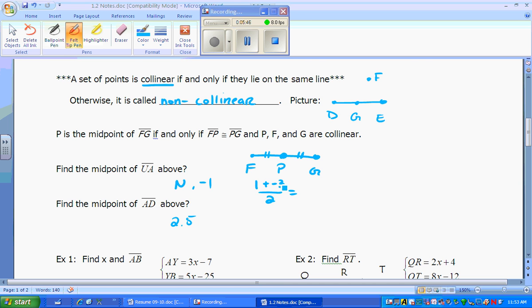So 1 plus negative 3 is negative 2 divided by 2, giving you negative 1, which is where it was located at N. So the midpoint formula is you take the two numbers, first number, add the second number, and then divide by 2, the midpoint.